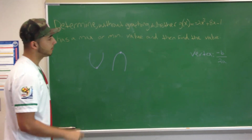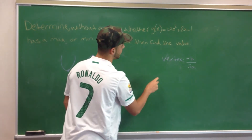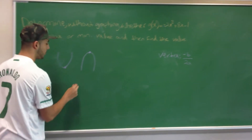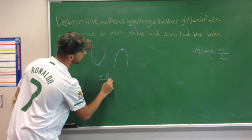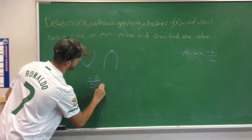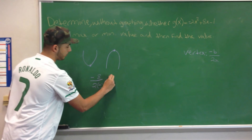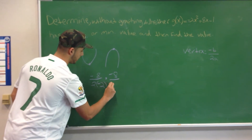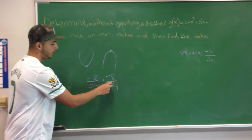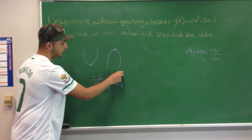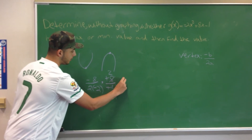To find the maximum value, we first need to find the vertex, which is negative b over 2a. We plug that in as negative 8 over 2 times negative 2, which makes that negative 8 over negative 4. We can then cancel out the negatives and reduce 8 and 4 to 2 and 1, which makes that 2.